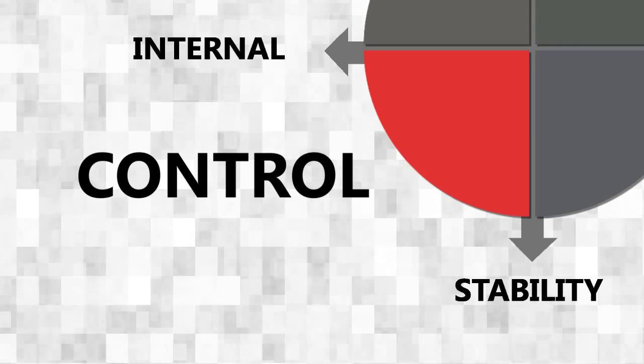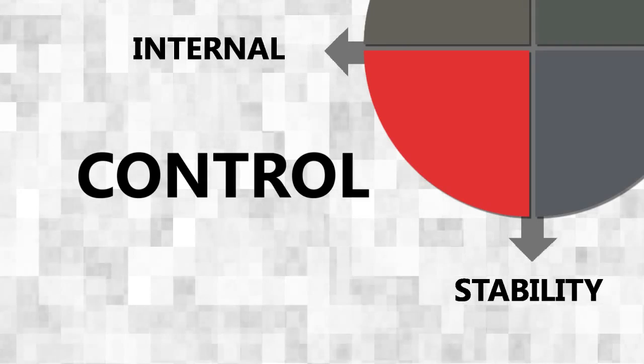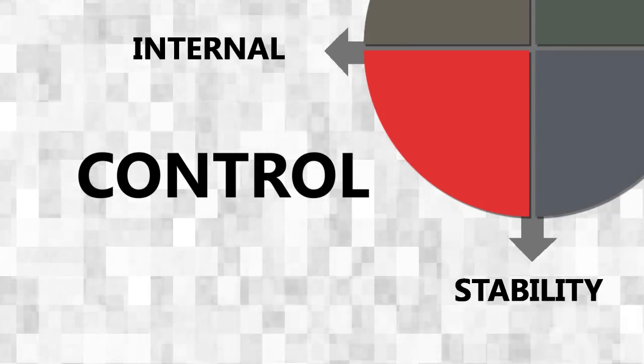Now let's look at the internally focused and stable person — the control-based person. This is the person who's held together by process. This is the engineer, the medical doctor, the troubleshooter. This is where there's a right way and a wrong way. There's a lot of complexity, so we're going to see a lot of methodology and process. There's a lot of data that we have to absorb here.